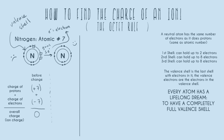After the change, the charge of the protons is still positive seven — the number of protons never changes, it's always the atomic number. Now nitrogen has ten electrons because it had seven and gained three. So the negative charge is negative ten. Positive seven plus negative ten gives an overall charge of negative three. We write this as N³⁻. This is how we indicate a nitrogen ion with a charge of negative three. A negative ion is called an anion.